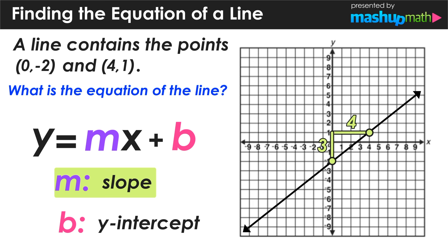And since this line is increasing from left to right, we know it has a positive slope, and we can conclude that the slope of this line is 3 over 4.